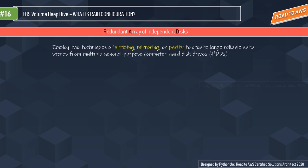RAID is a data storage virtualization technology that combines multiple physical disk drive components into one or more logical units for the purpose of data redundancy, performance improvement, or both. It employs techniques of striping, mirroring, or parity to create large reliable data stores from multiple general-purpose HDDs.